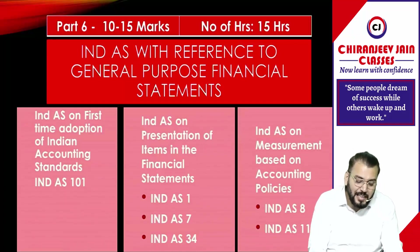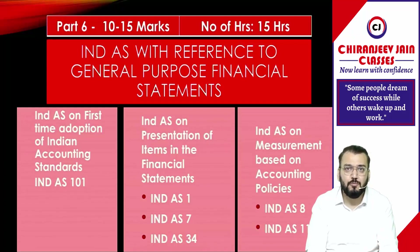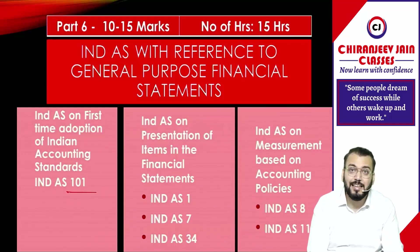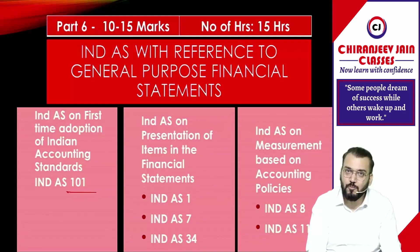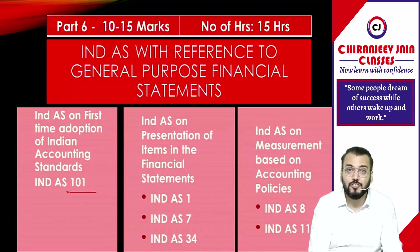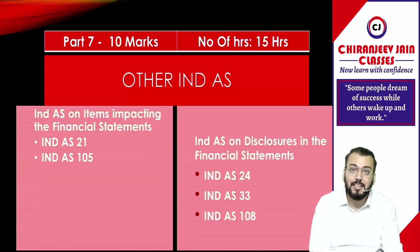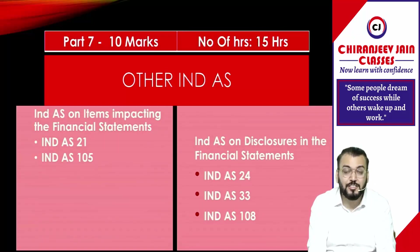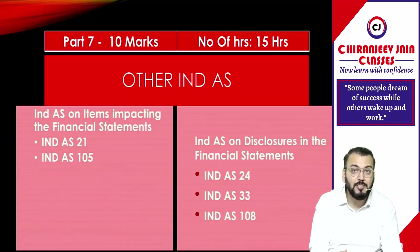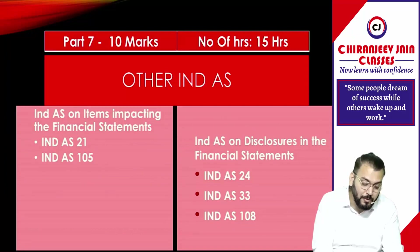Then Part 6: move to Ind AS related to general purpose financial statements — Ind AS 101, Ind AS 1, Ind AS 7, Ind AS 34, and Ind AS 8. These are small chapters with a weightage of 10 to 15 marks, and I have given 15 hours for these. Then Part 7 consists of other remaining Ind AS — for example Ind AS 21, Ind AS 105, Ind AS 24, Ind AS 33, and Ind AS 108. These are also small chapters, and I have given 15 hours for them. The weightage from these chapters may be up to 10 marks.